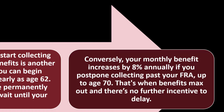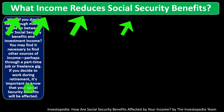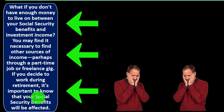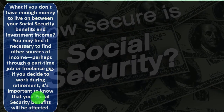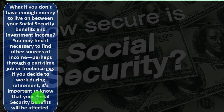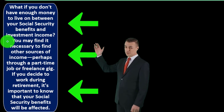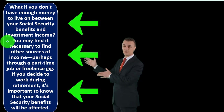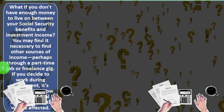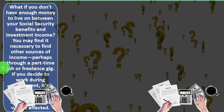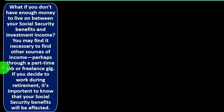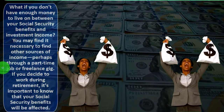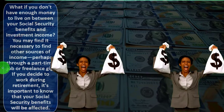Conversely, your monthly benefit increases by 8% annually if you postpone collecting past your full retirement age, up to age 70 — that's when benefits max out and there's no further incentive to delay. If you don't have enough money from Social Security benefits and investment income in retirement, you may find it necessary to find other sources of income, perhaps through a part-time job or freelance gig.